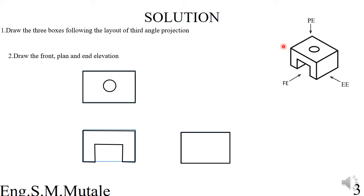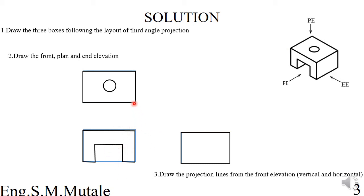Step three is to draw the projection lines from the front elevation. These projection lines are vertical and horizontal lines. From the front elevation, vertical lines are thrown going all the way up, and horizontal lines go across. There is also a circle here, so vertical lines should be projected from the circle going all the way as well.